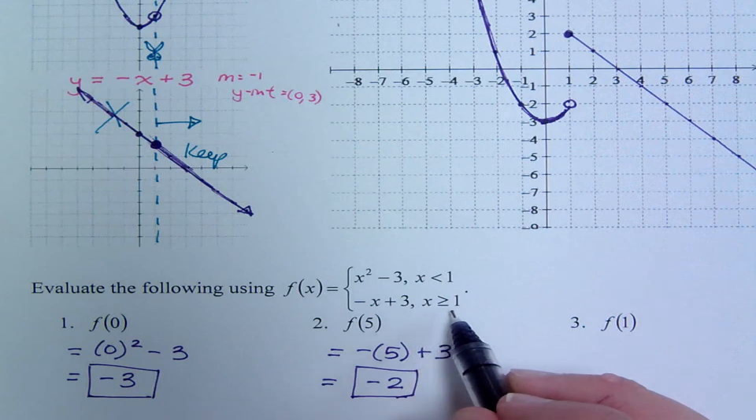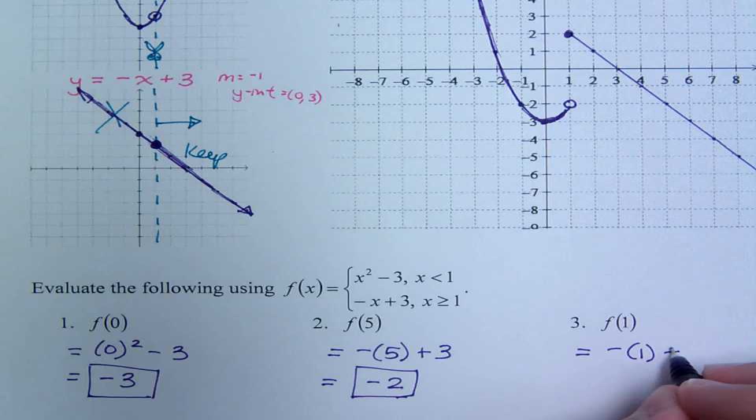And finally, we have f of 1. So is 1 less than 1? No. But is 1 greater than or equal to 1? Yes, so it goes here. So negative 1 plus 3 gives me positive 2.